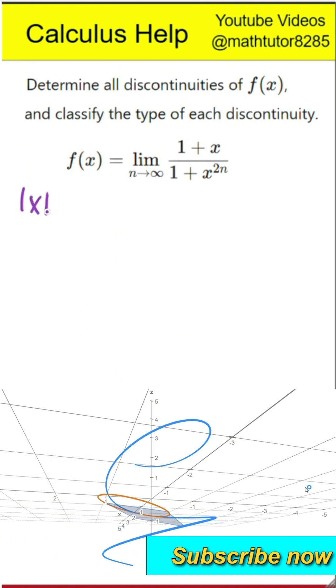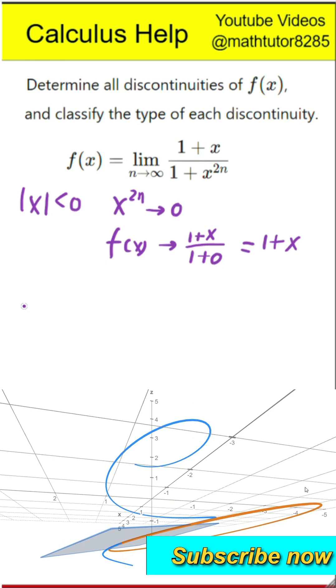First step is to analyze the limit behavior. Let's understand how the function behaves depending on the value of x. First, when the absolute value of x is less than 1, then x to the power 2n becomes closer and closer to 0. So the expression becomes 1 plus x divided by 1, which simplifies to just 1 plus x.